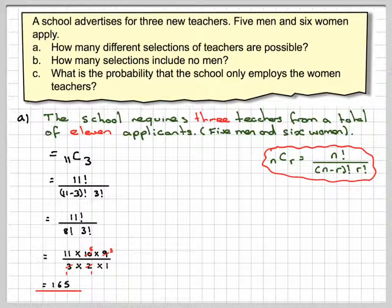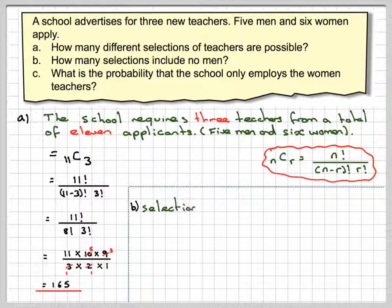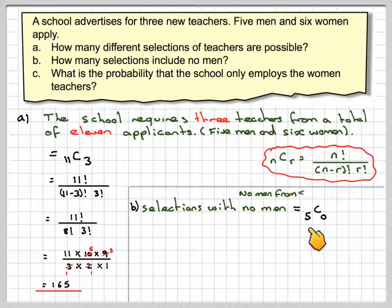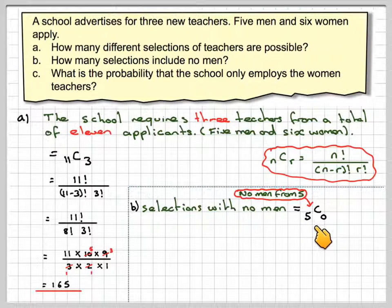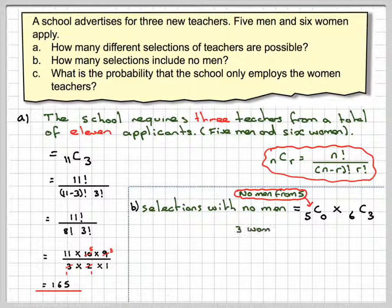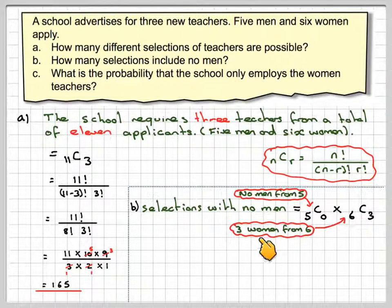Part B is how many selections include no men. So selections with no men. We're going to choose none from the men. There were 5 men, so 5C0. And 3 from the 6 women, so 6C3.